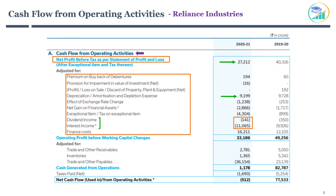Remember from the Income Statement: Other Income refers to revenue generated from sources other than the company's core activities. This includes income from financial investments like dividends and interest. In short, this income is not related to core operating activities. Hence, this income is subtracted from operating activities. You will notice later that this income is added back into investing activities.